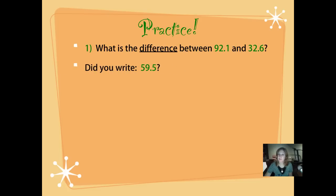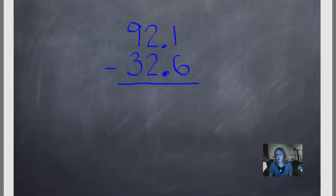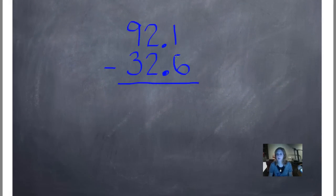Did you write 59 and 5 tenths? Let's check that now. Okay, we'll start with the number in the tenths place. 1 minus 6. We can't do that. So we'll write a 1 above and borrow 10 so that we have 11 here. 11 minus 6 is 5. Bring down our decimal. Our decimals are all lined up perfectly. 1 minus 2. We can't do that. 11 minus 2 is 9. 8 minus 3 is 5. There's our answer.